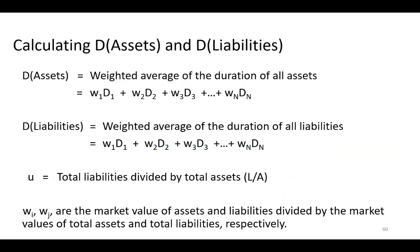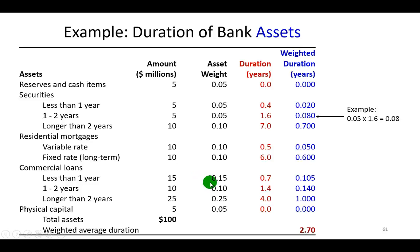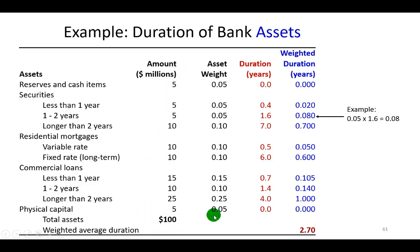In general, since we're dealing with balance sheet items, the duration of assets is the weighted average of the duration of all interest-sensitive items, and likewise for the duration of liabilities. Using this example, a bank analyst has calculated the duration of each rate-sensitive item — shown in the red column — and these are the weights, which represent how much of each item we have in relation to the total.